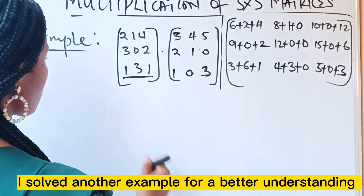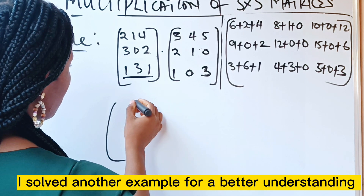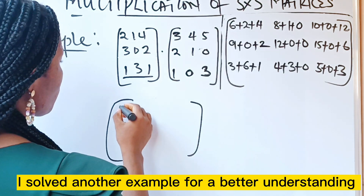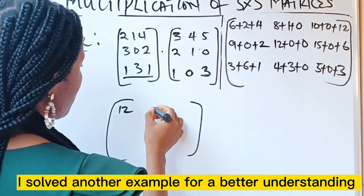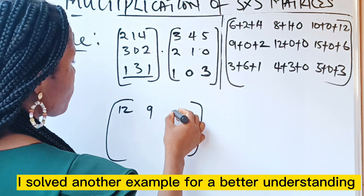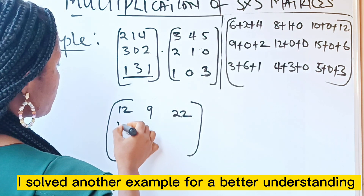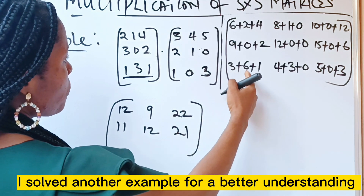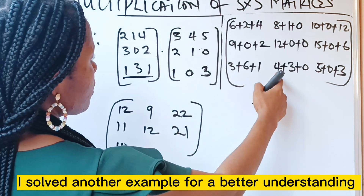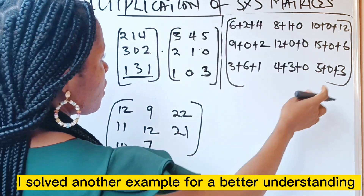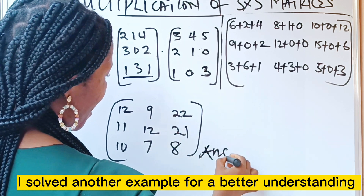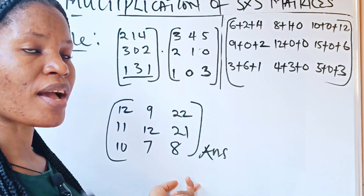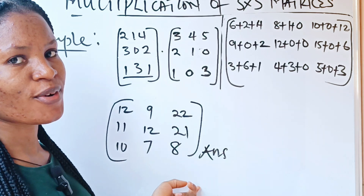Let's form our final result. Opening the brackets: 6+2+4=12, 8+1+0=9, 10+0+12=22, 9+0+2=11, 12+0+0=12, 15+0+6=21, 3+6+1=10, 4+3+0=7, 5+0+3=8. And this is our long-awaited result. Now I'm going to solve a second example — that's where you are going to understand it more.